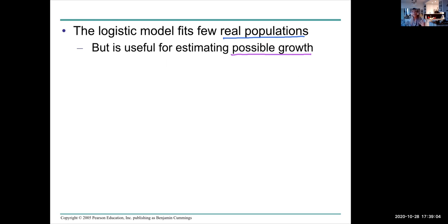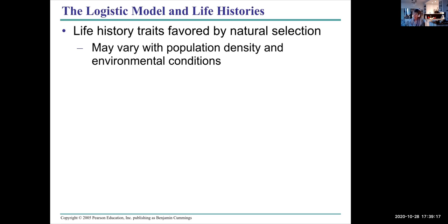The exact logistic model doesn't really fit real populations, but it is very useful for estimating possible growth. Fluctuations that are caused by weather conditions, by other abiotic variables, can skew population size.